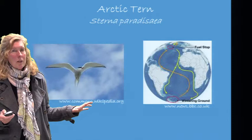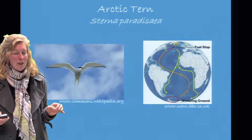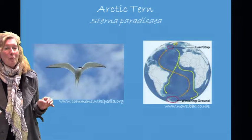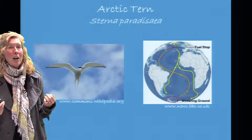The Arctic tern is a wonderful example of a migratory species. This species flies from the North Pole to the South Pole and back annually. It takes an enormous amount of energy to make that migration, and migratory corridors need to be safe and pristine so that these species can survive the migration in order to reproduce.